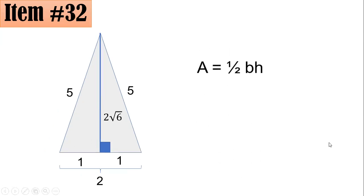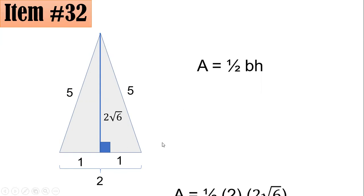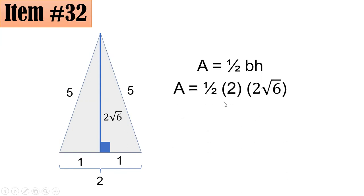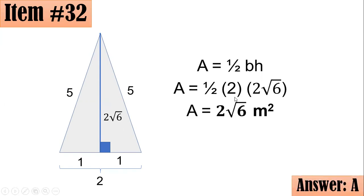The area of a triangle is one half times base times height. The base is 2 and the height is 2 square root of 6. So area equals one half times 2 times 2 square root of 6. The one half and 2 simplify to 1. Hence, the area of this triangle is 2 square root of 6 meters squared, letter A.